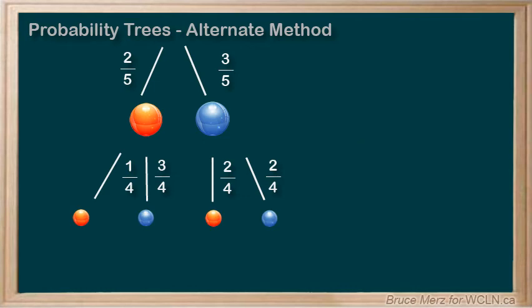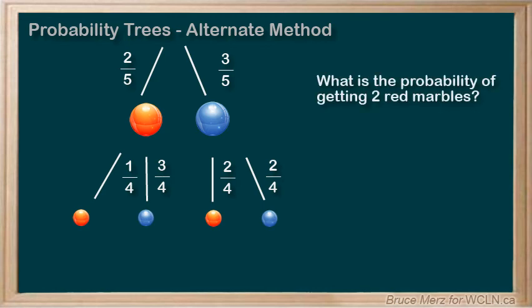Well, if you wanted to figure out the probability of any one branch happening, like say a blue marble first and then a red marble second, then you would just multiply the probabilities along that branch. For instance, we want to know the probability of getting two red marbles, so that would be this branch here.